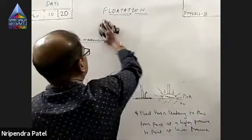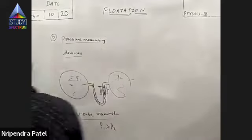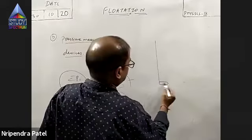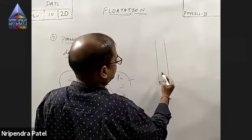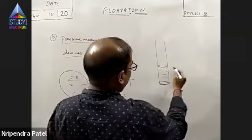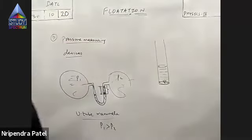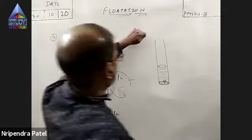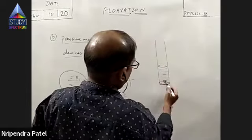Suppose I pour some liquid in a tube or in a cylinder. If I pour some liquid in it, the level of liquid starts rising. As the level of liquid starts rising, what will happen to the pressure acting at the bottom of the vessel due to the height of the liquid column?